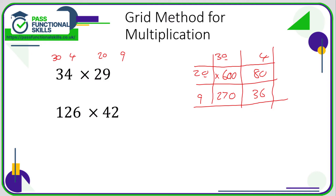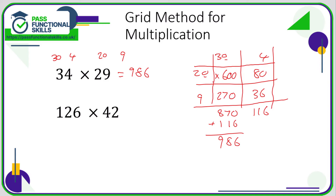Now all we need to do is add these numbers up. 600 plus 270 is 870. 80 plus 36: 0 plus 6 is 6, 8 plus 3 is 11. Then add 870 plus 116: 0 plus 6 is 6, 7 plus 1 is 8, 8 plus 1 is 9. So the answer is 986. With this method there's more adding involved and you're not doing only single-digit multiplication, but it's still fine — just be very careful with 30 times 20, as that's where things tend to go wrong.